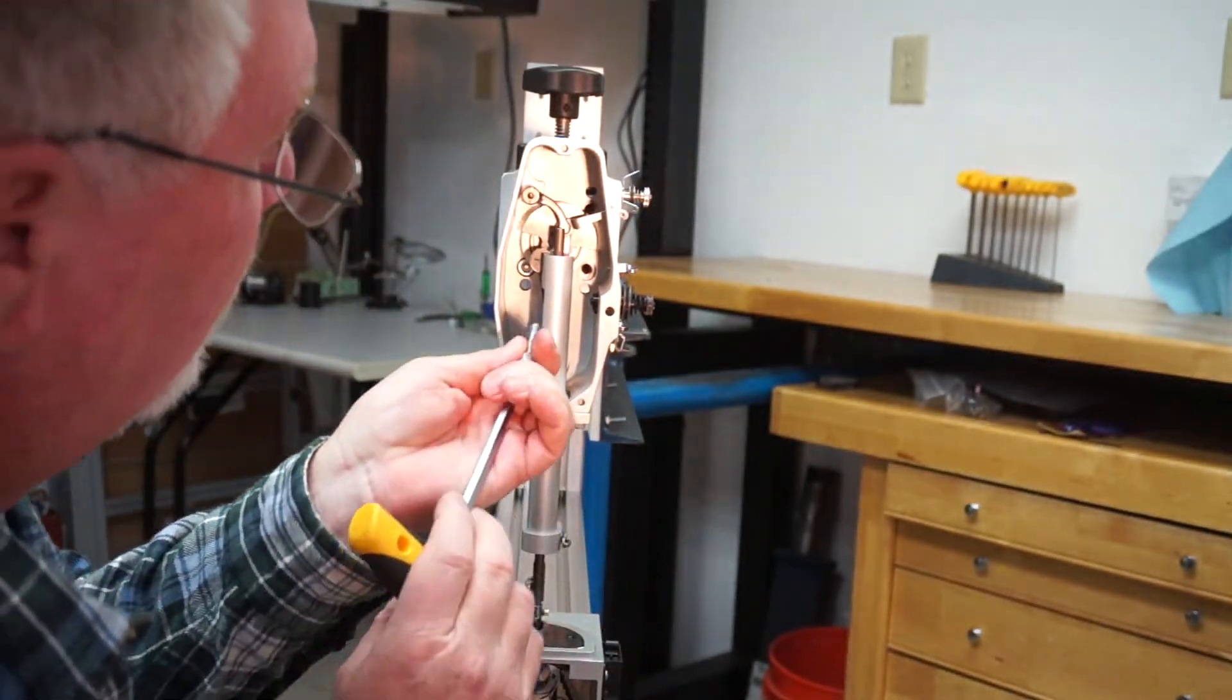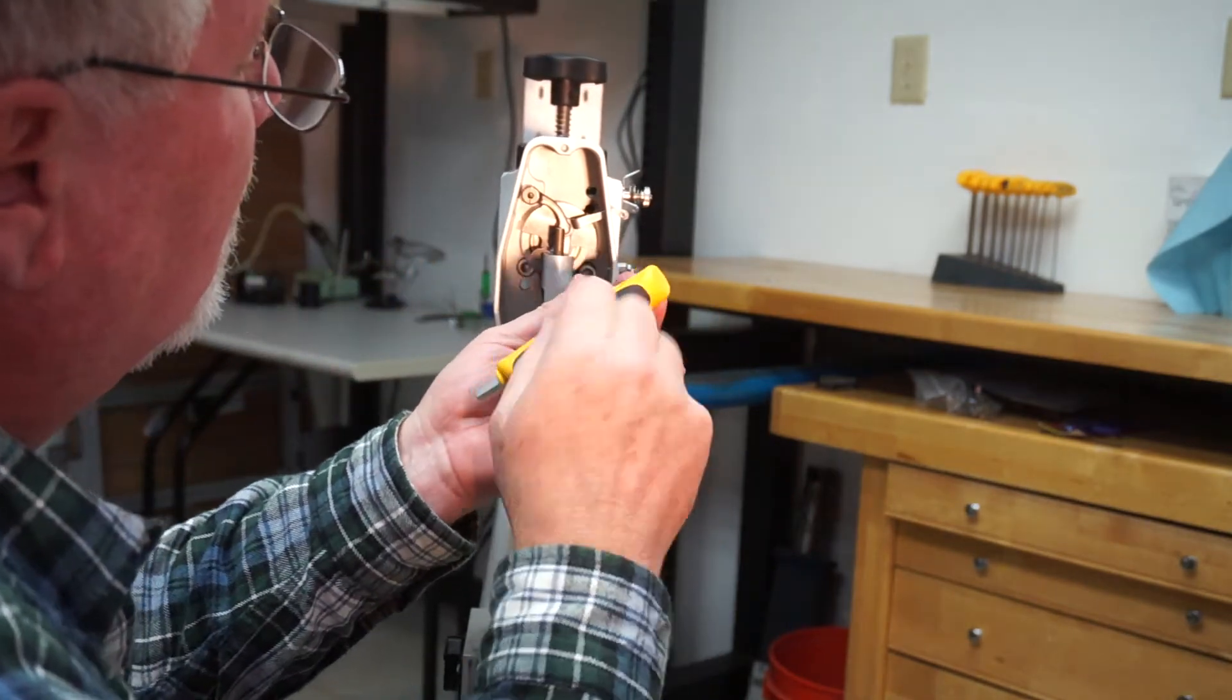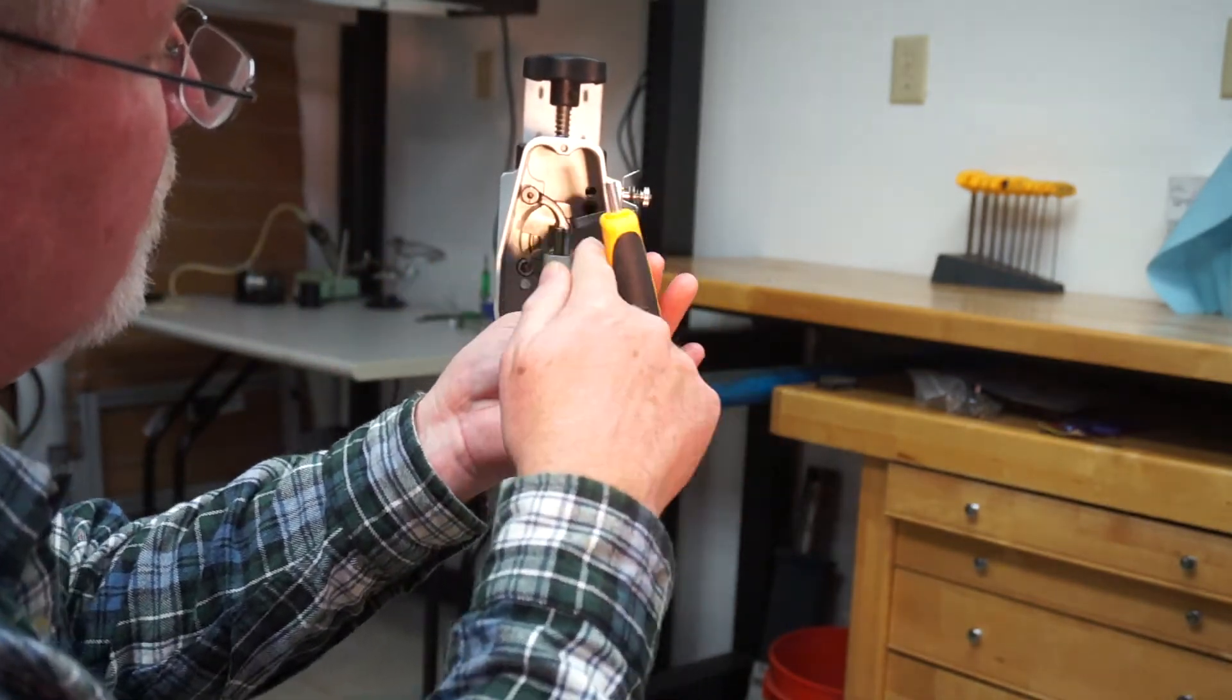Make sure your needle will go down through the hole in the darning foot. Put your next screw in.